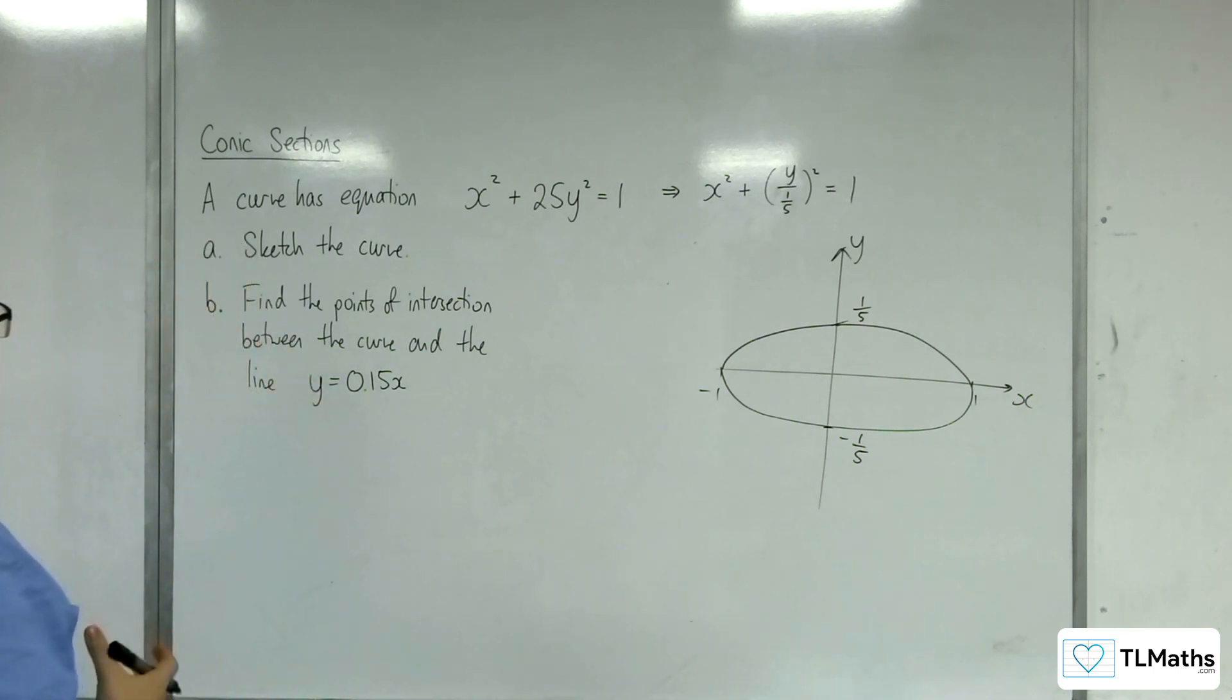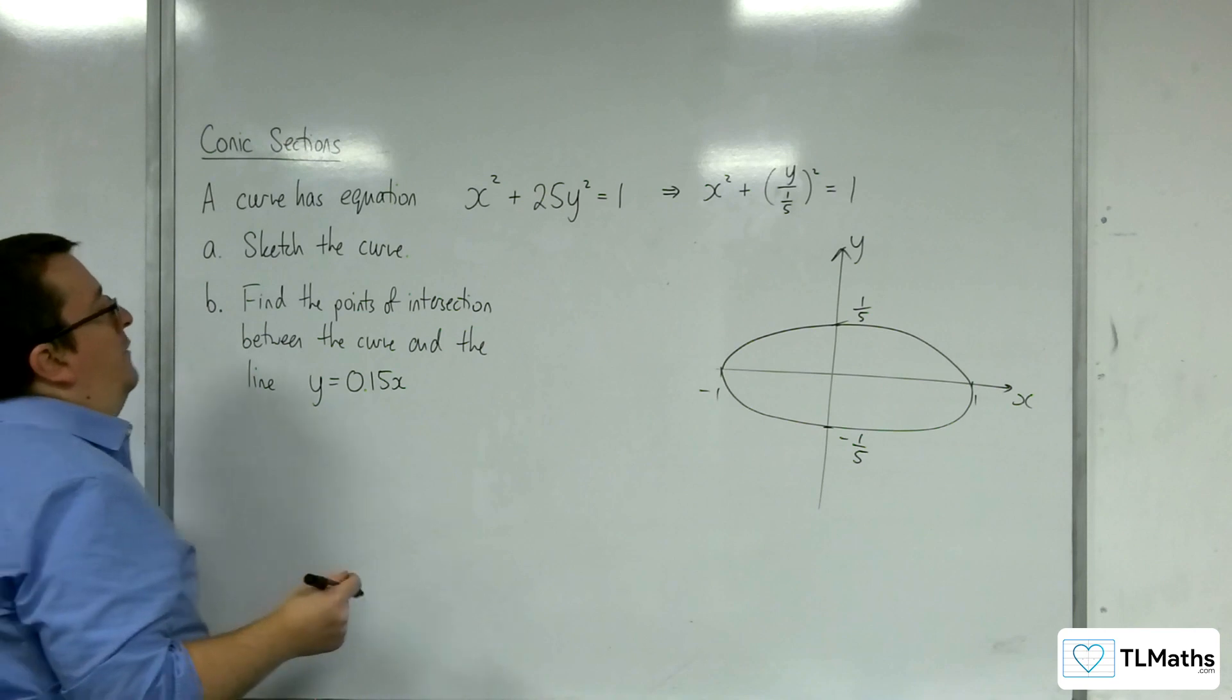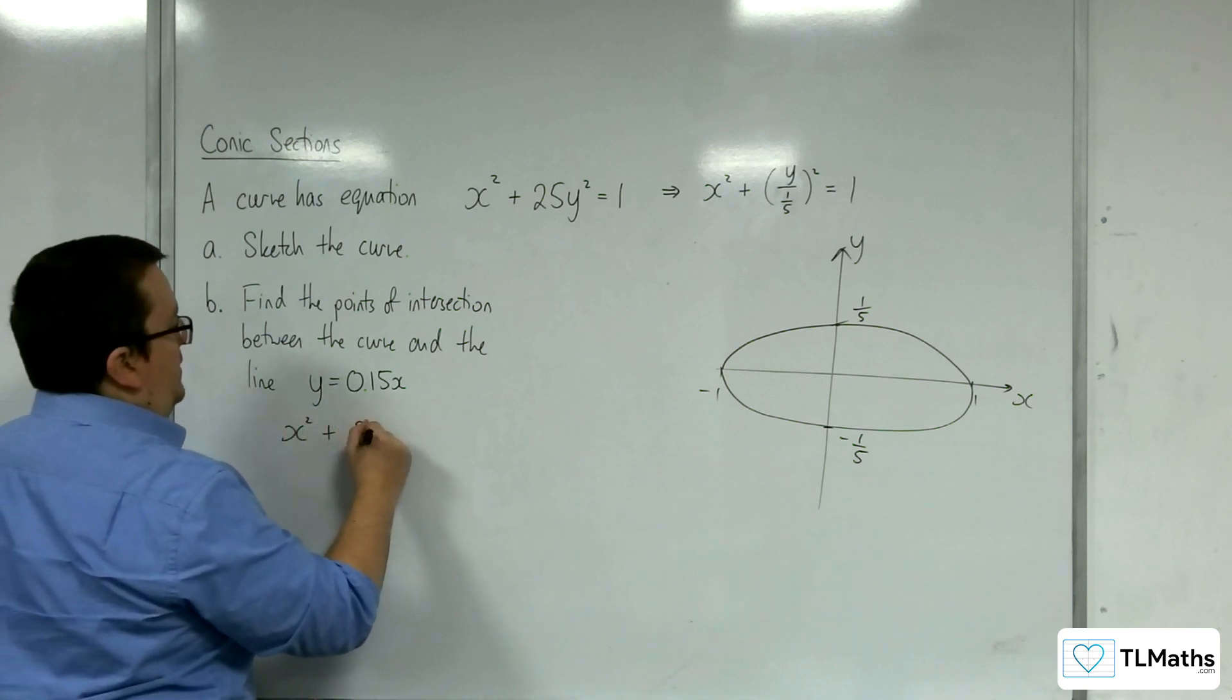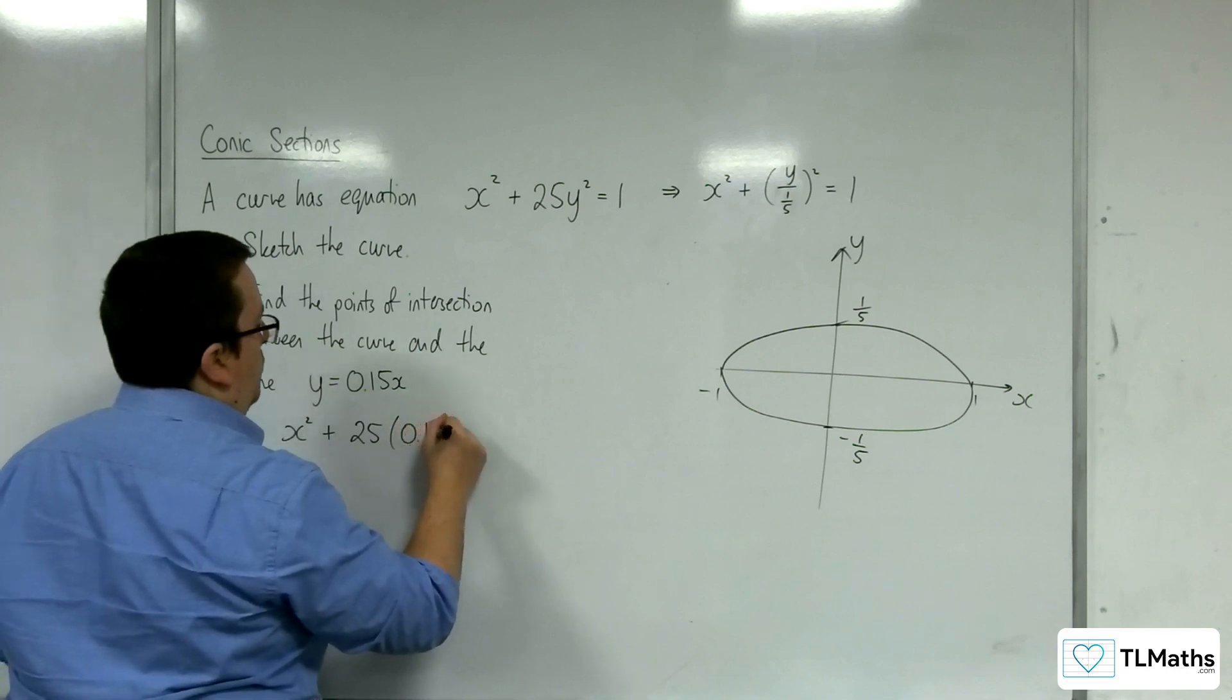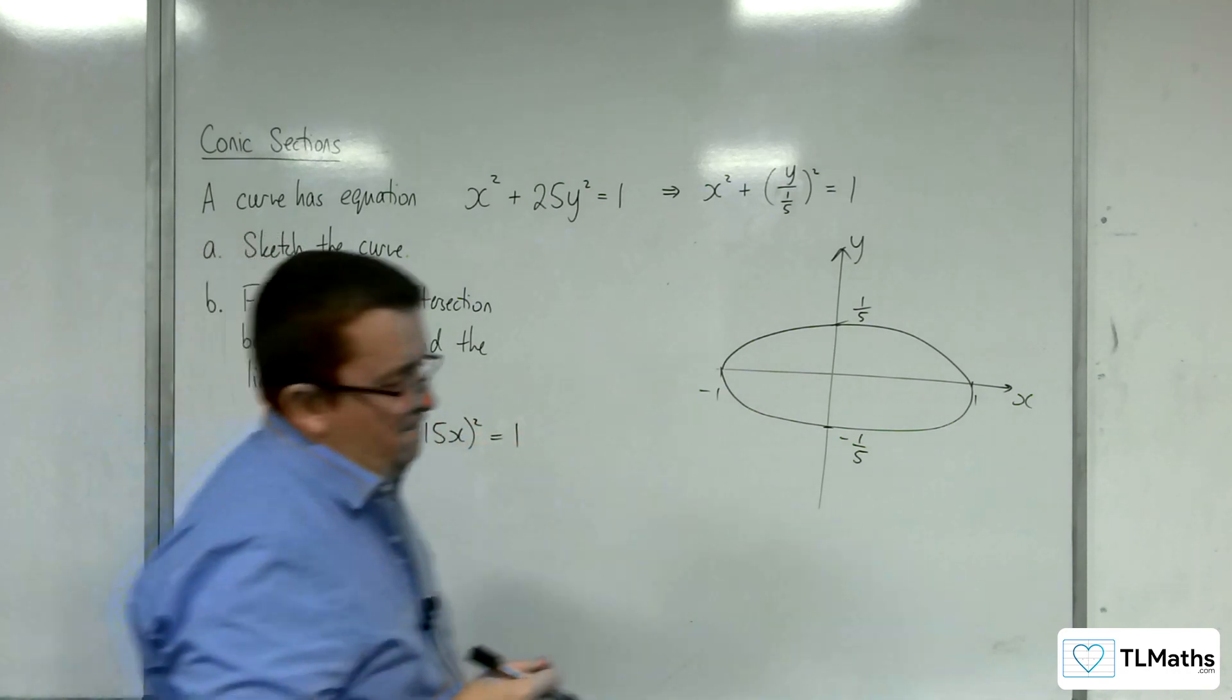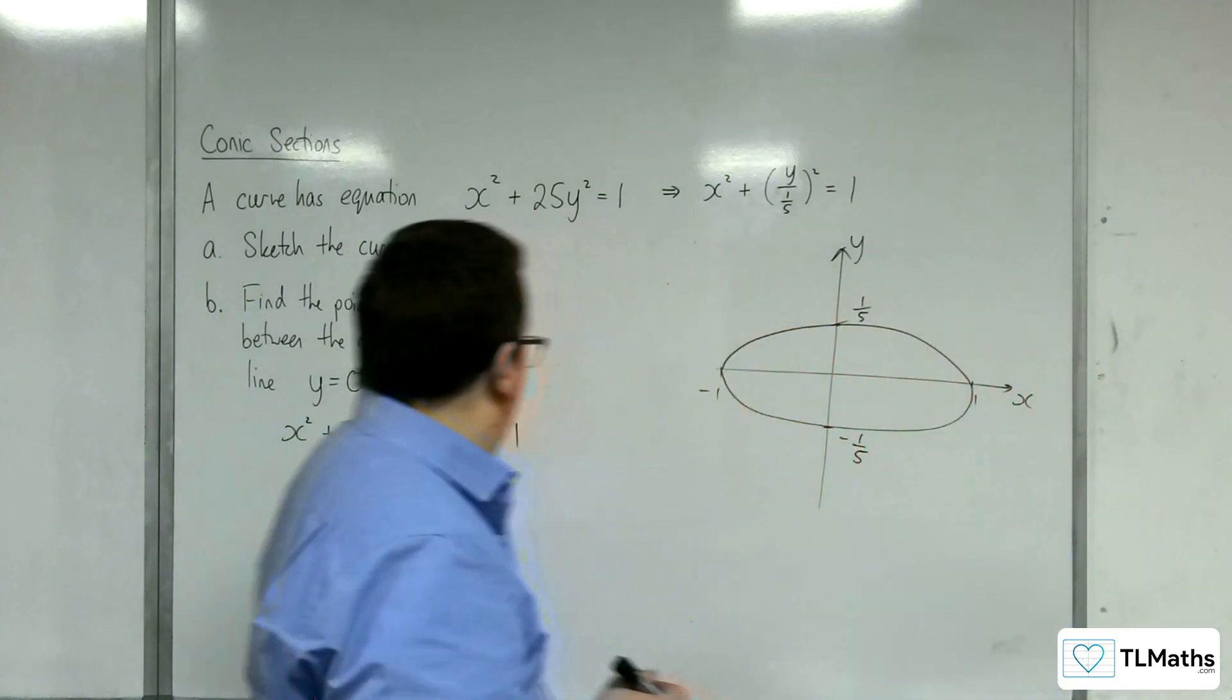Right, so find the point of intersection between the curve and the line y equals 0.15x. So, we've got x squared plus 25 lots of 0.15x all squared equals 1.